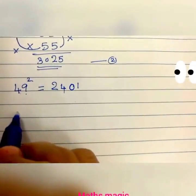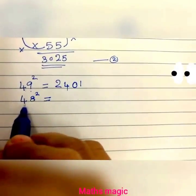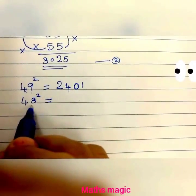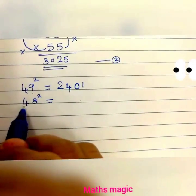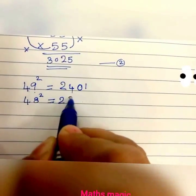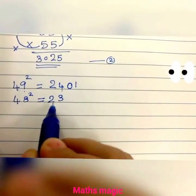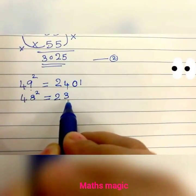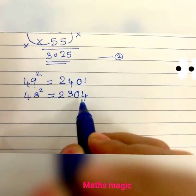For 48 squared: 50 minus 48 is 2, so we subtract 2 from 25: 25 minus 2 is 23. We have subtracted 2, so we take the square of 2, which is 4, written as 2 digits: 04. So 48 squared is 2304.